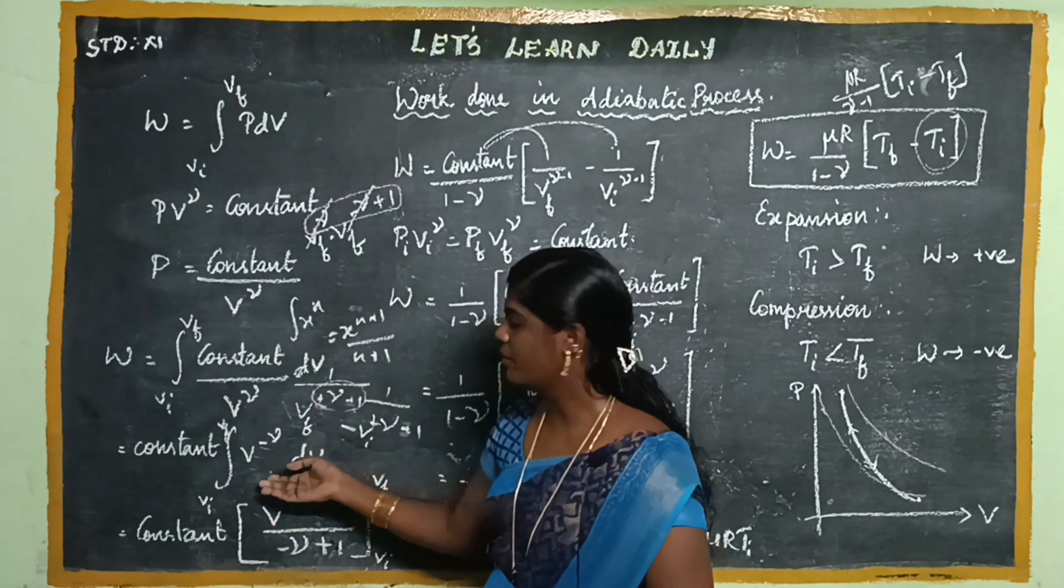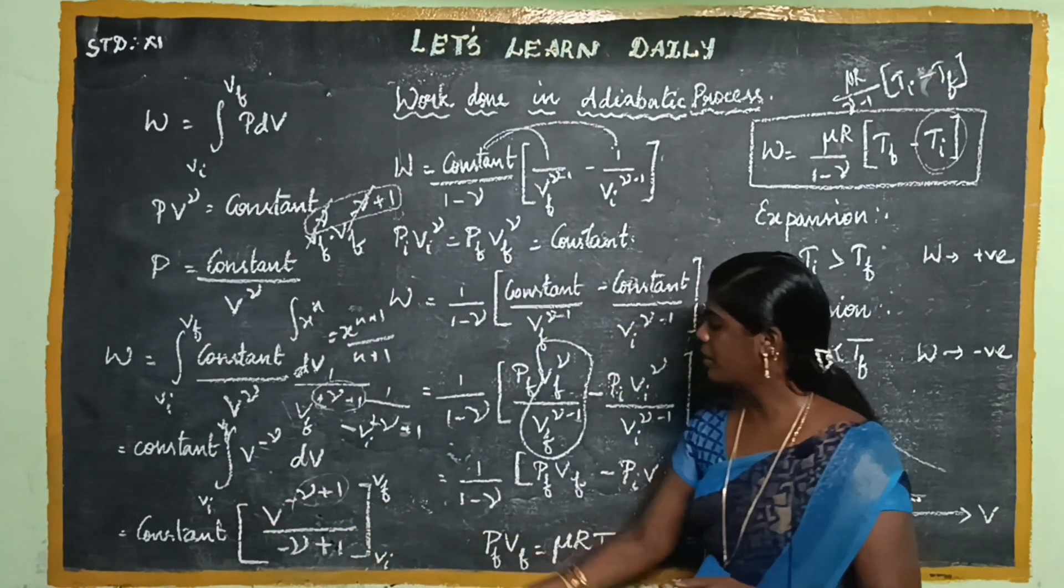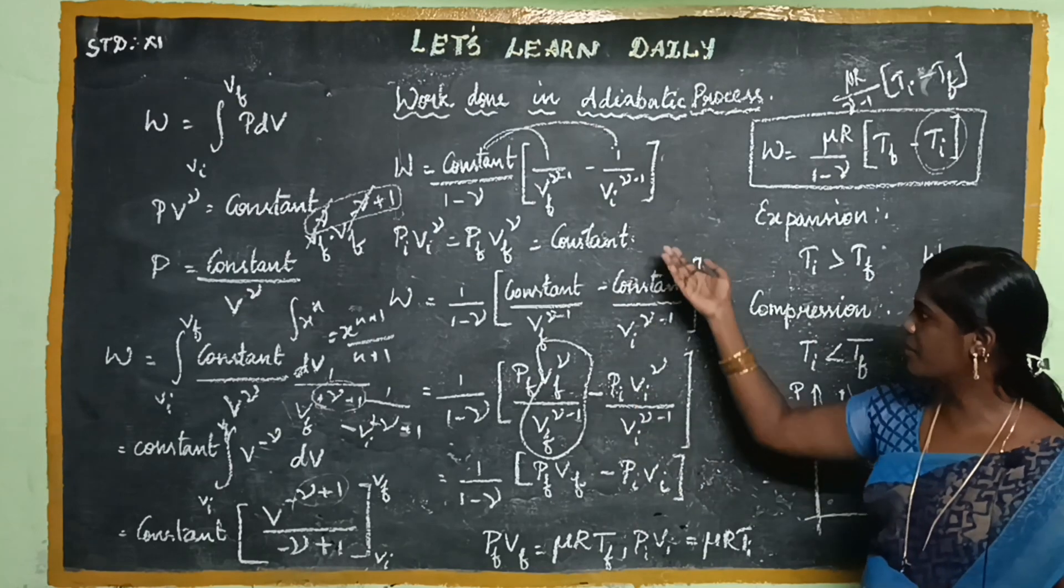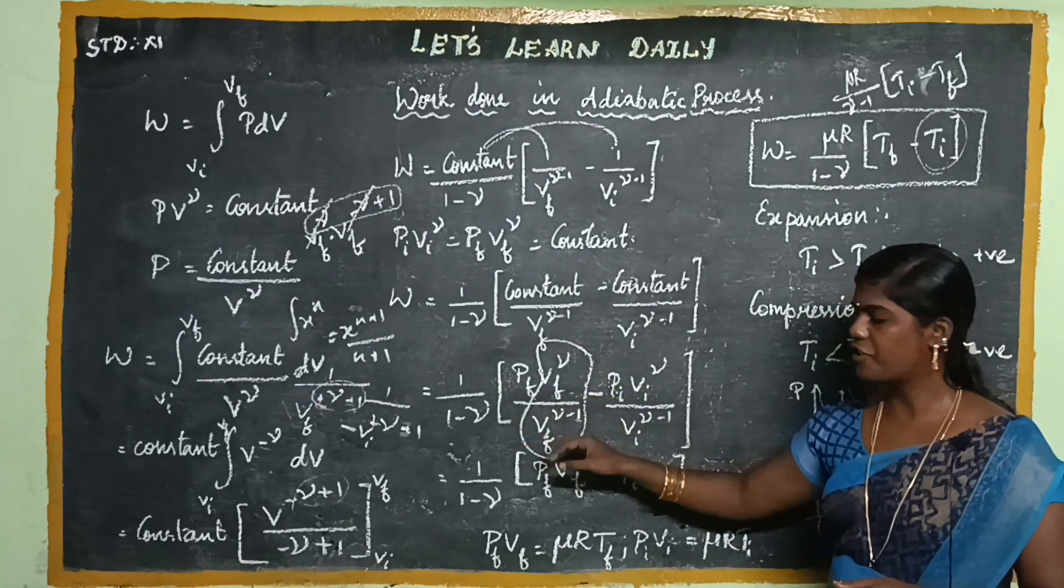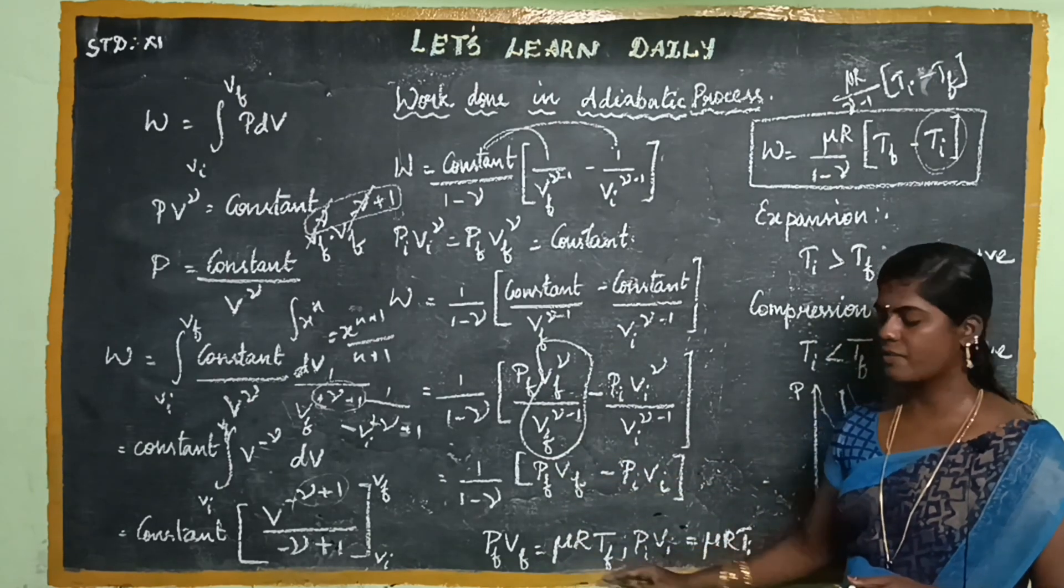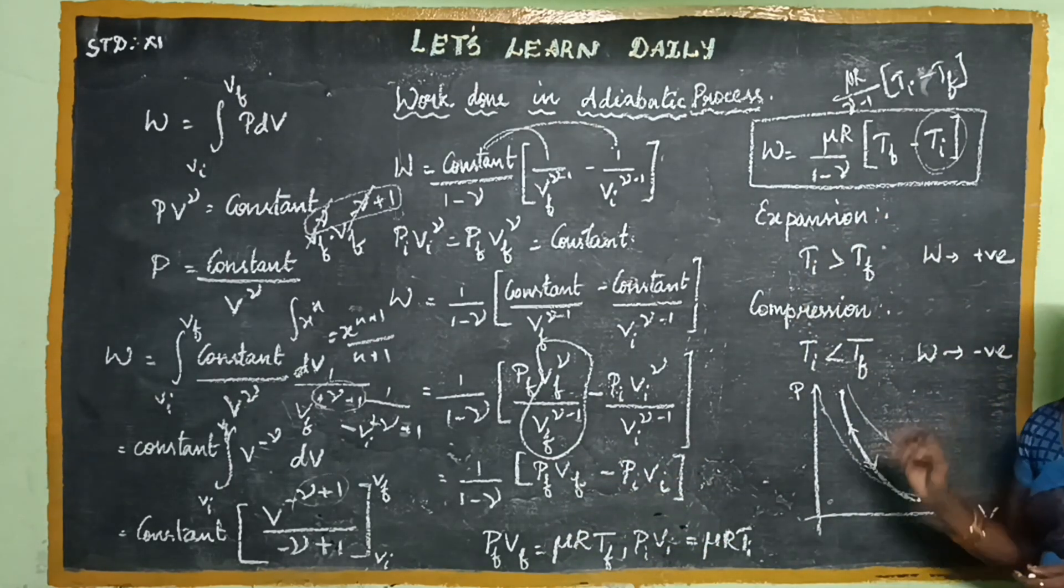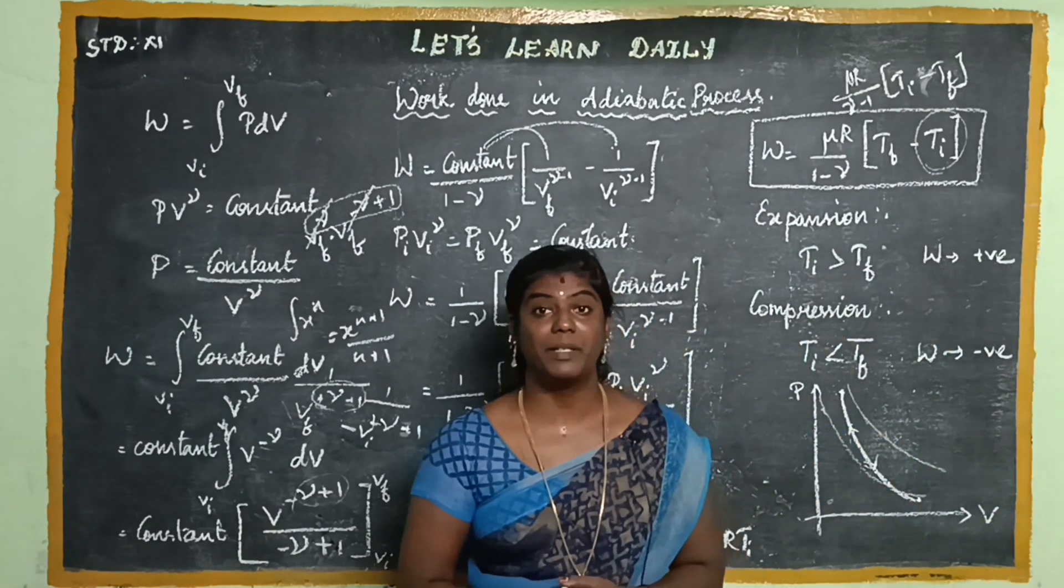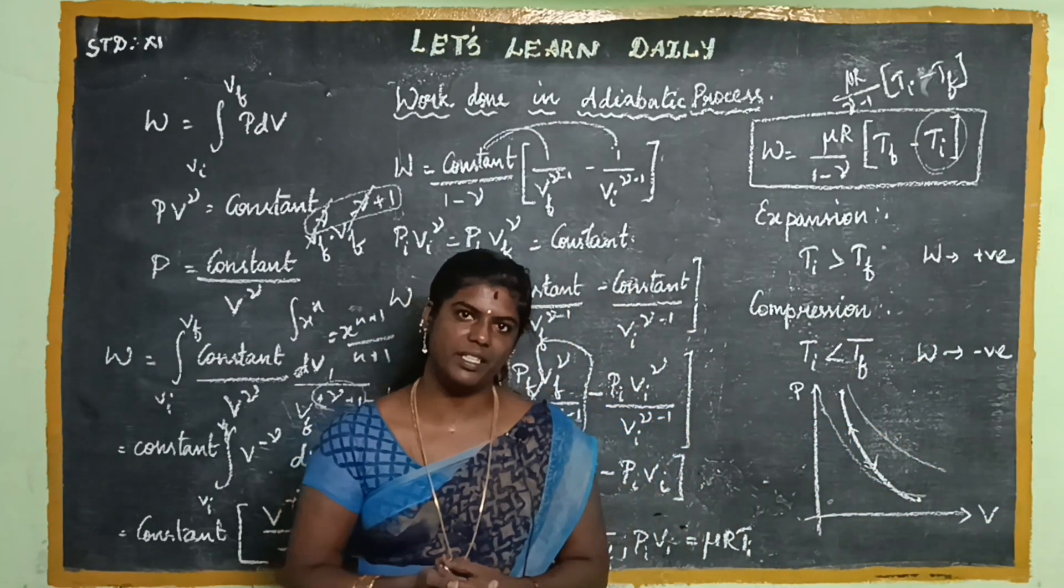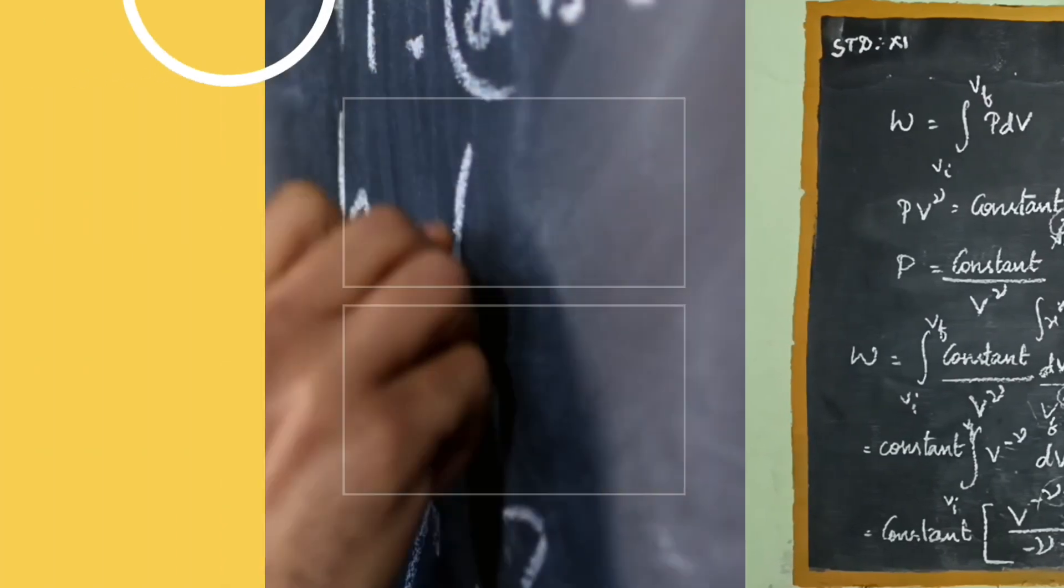So what happens is we start with the equation of state, integrate and substitute the constant value, rearrange the power terms, and we get the final equation. This is an important question. If you understand the derivation, you won't be confused. Thank you!